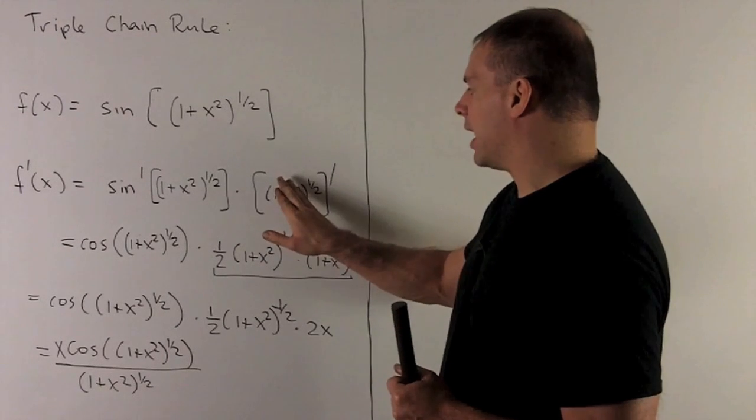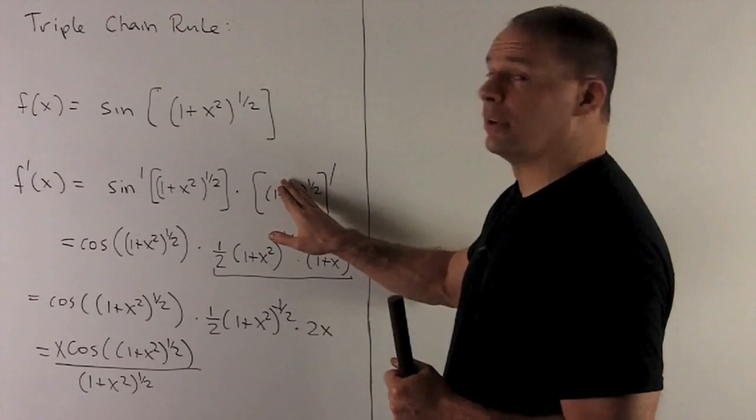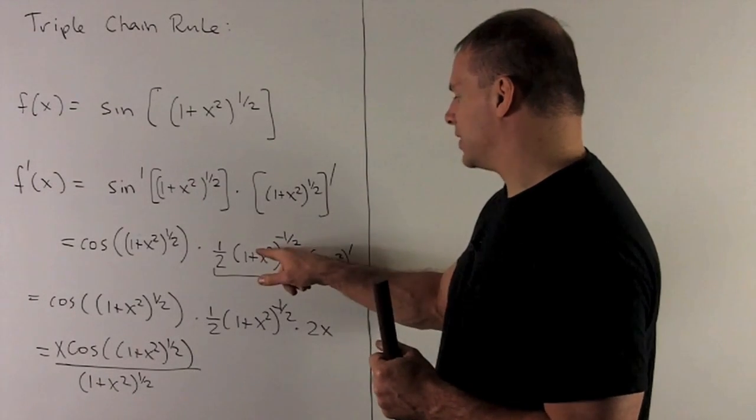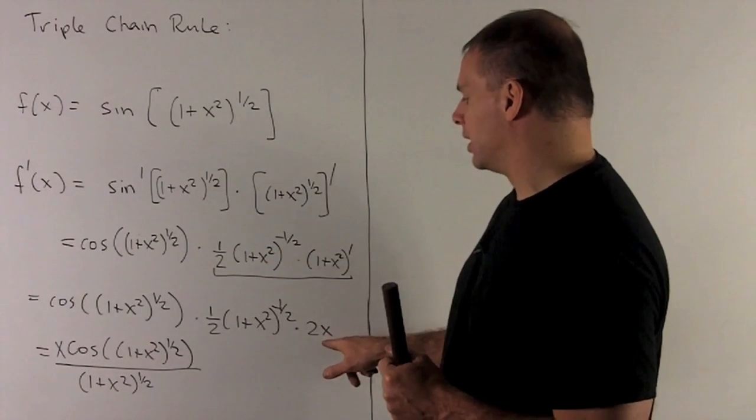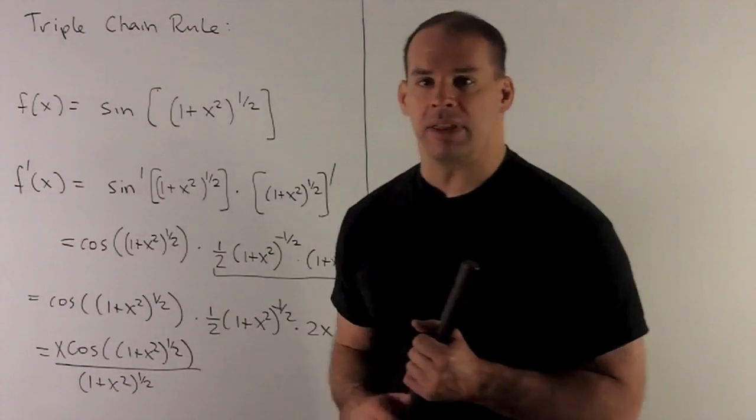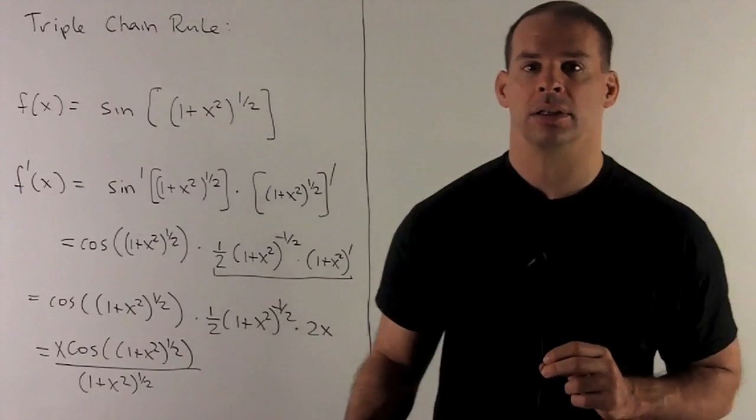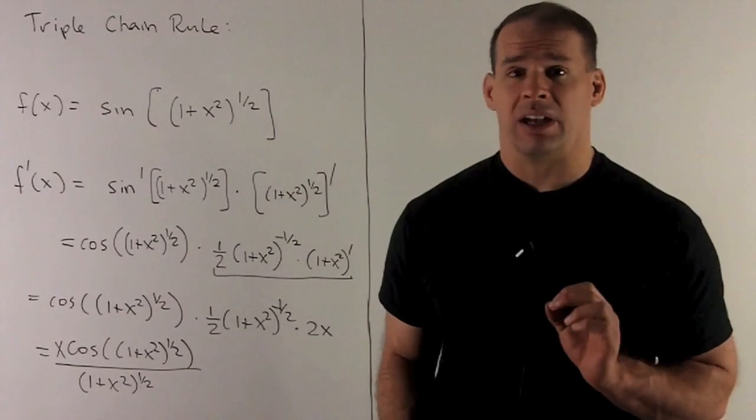So, we cover the inside up. What's the derivative of that? 1 half minus 1 half. Put that back in. Take the derivative of the inside. That's going to give me 2x. And then, collapse everything to your final quotient. And you're done. So, that is how you want to do it when you get enough practice.